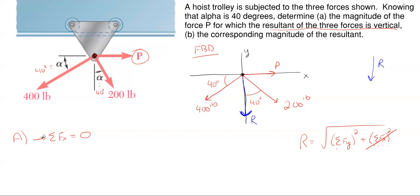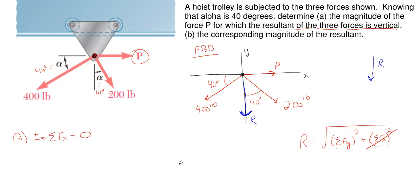Let's sum forces in the x-direction, taking right as positive. P is 100% in the x-direction. The 200 and 400 are at angles, so they each have x and y components. The 200 goes down-right so its x-component is positive. The 400 goes down-left so its x-component is negative. P is also positive.